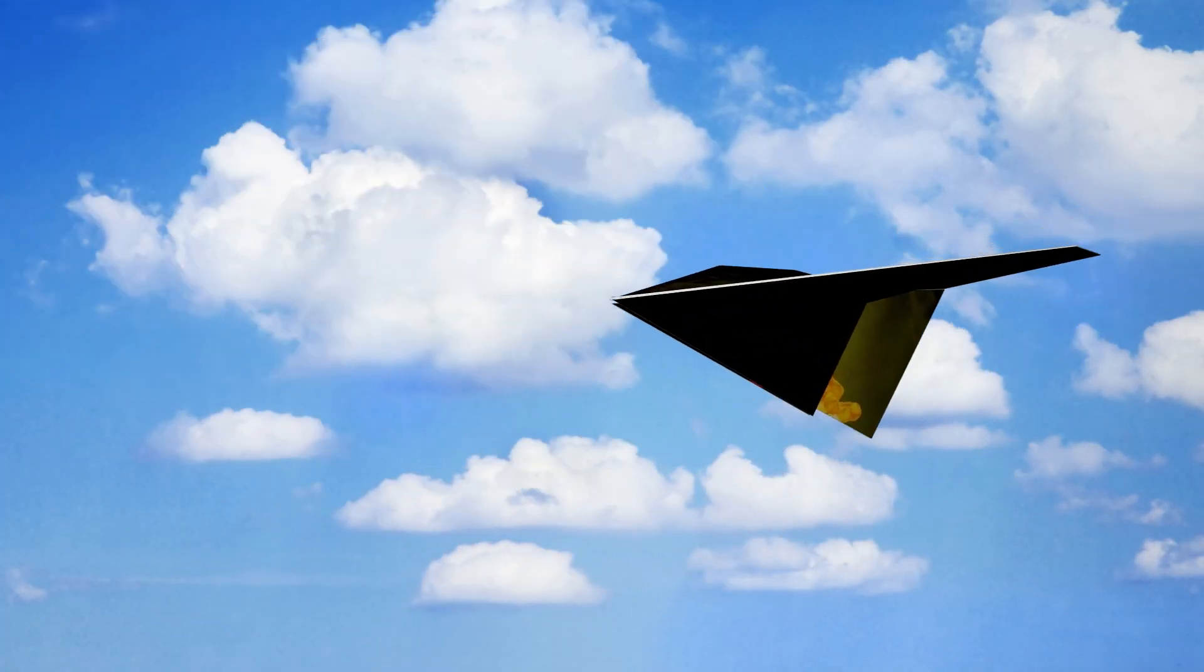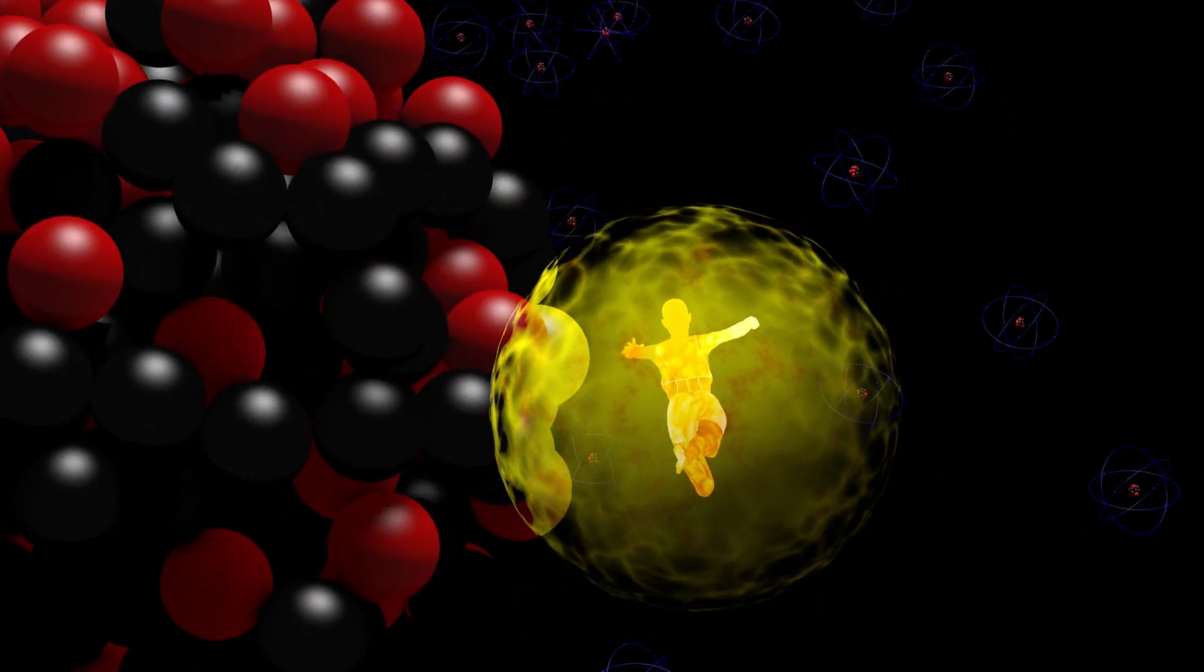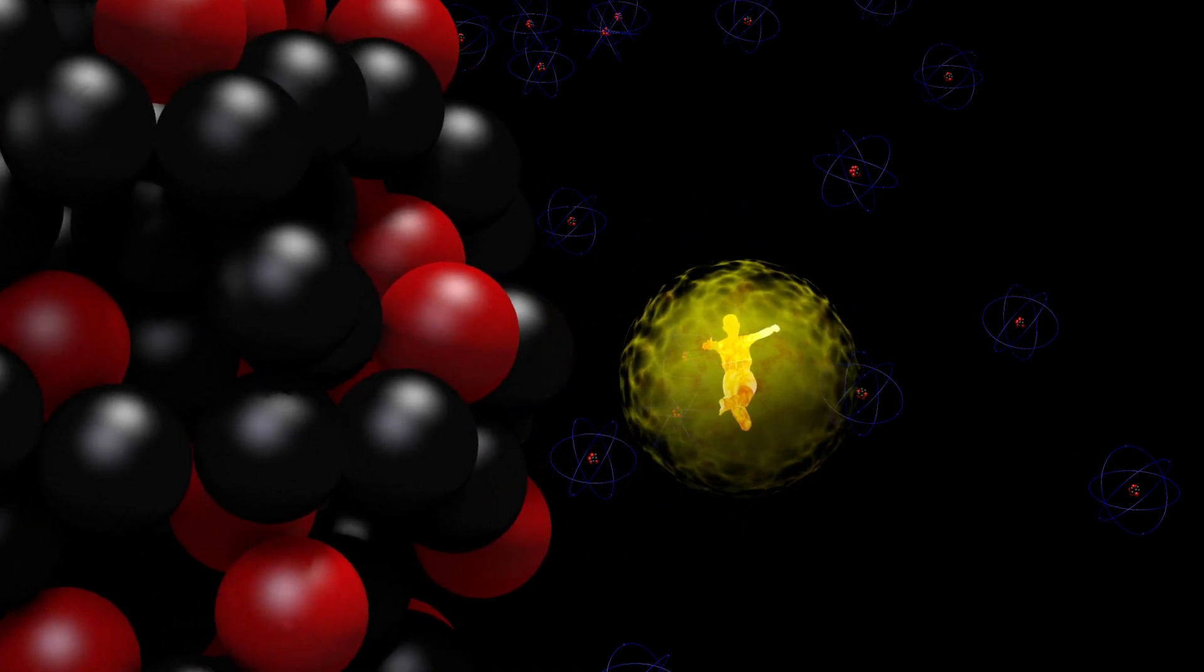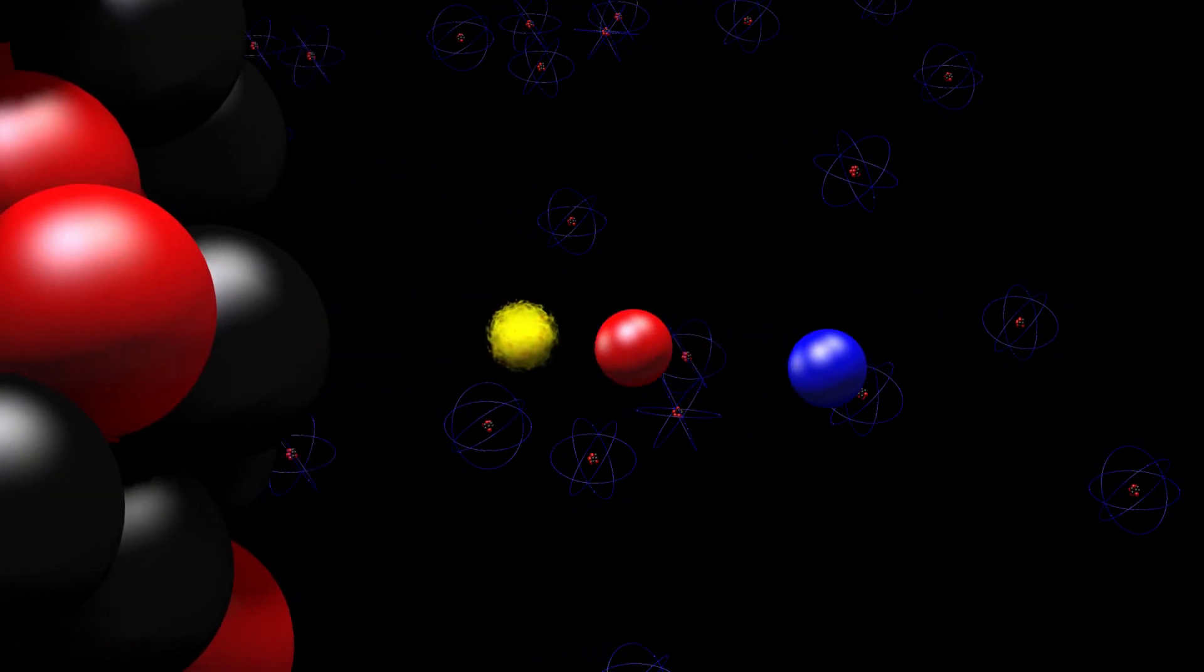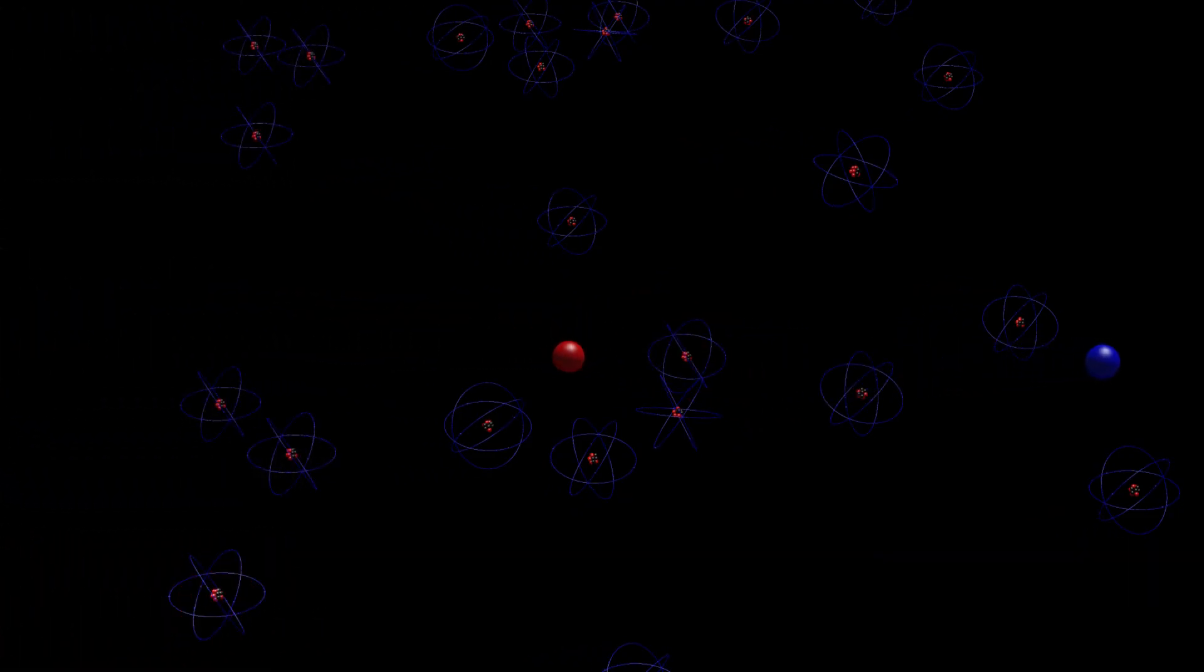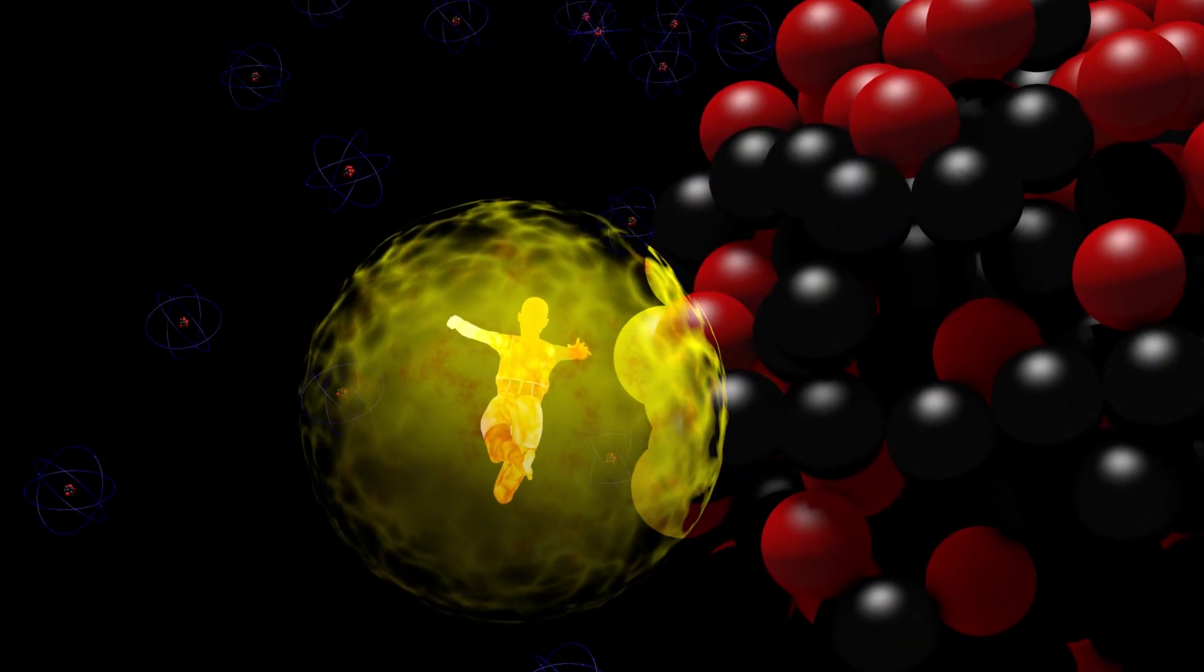The most common interaction for gamma rays with extremely high energy is pair production. In pair production, as a gamma ray passes near an atomic nucleus, the nucleus recoils, and the gamma ray is transformed into a matter and antimatter particle pair, such as an electron and a positron.